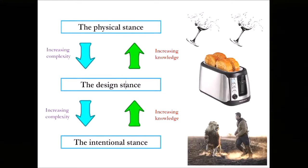There are two dynamics at work here. One is increasing complexity in the entity or system we're trying to explain: if it's too complex for the physical stance, we move to the design stance, and if it's too complex for the design stance, we move to the intentional stance. We don't start attributing beliefs and desires to the toaster, much less to the glass. We only take up the intentional stance when the design stance is no longer working for us.